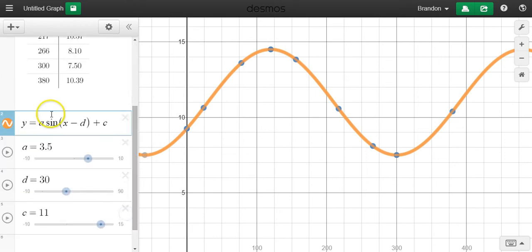So now to read our equation, we have Y equals 3.5 times sine of X minus 30 degrees, and that at the end, plus 11. So that's the equation that models this curve here.